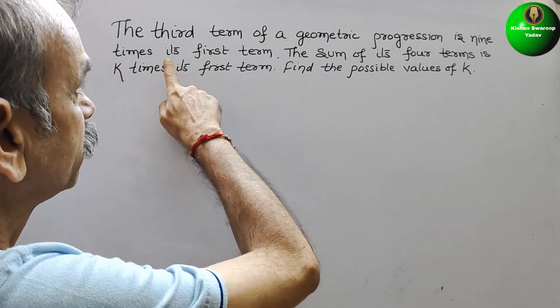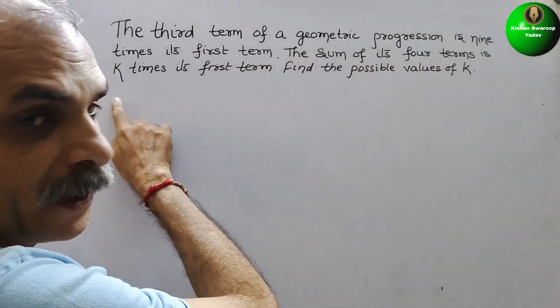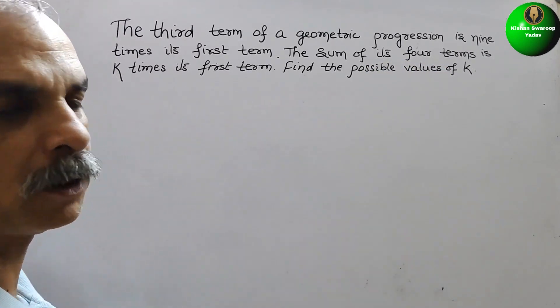Your question is: the third term of a geometric progression is nine times its first term. The sum of its four terms is k times its first term. Find the possible value of k.